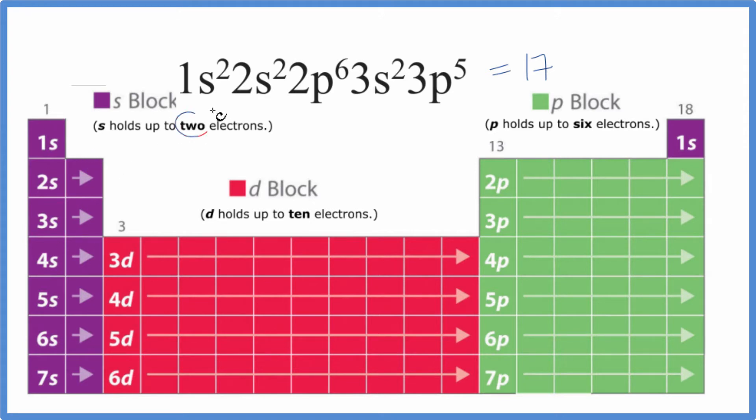Then we go 3d1, 2, 3, all the way up to 3d10. d can hold 10 electrons. p holds up to 6 electrons.